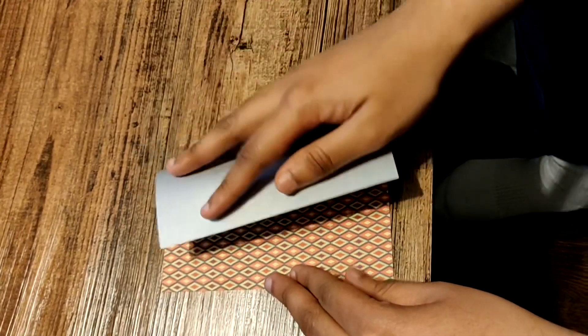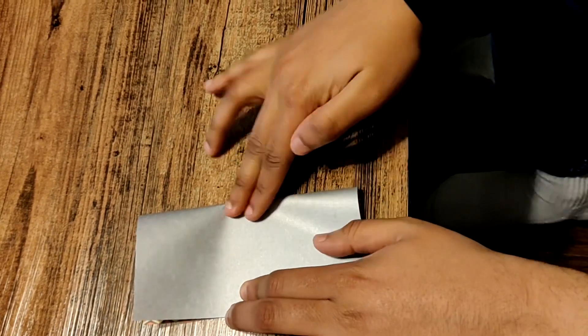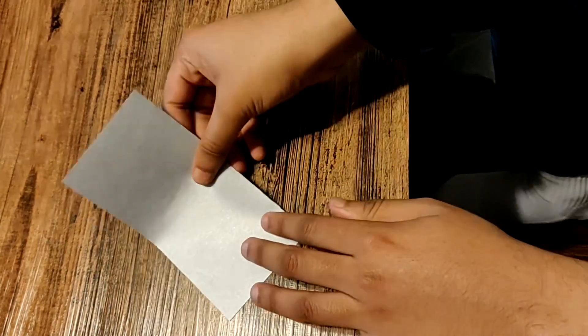So we're going to fold it in half like this. Make it into a nice little rectangle. Then we're going to fold it in half again.